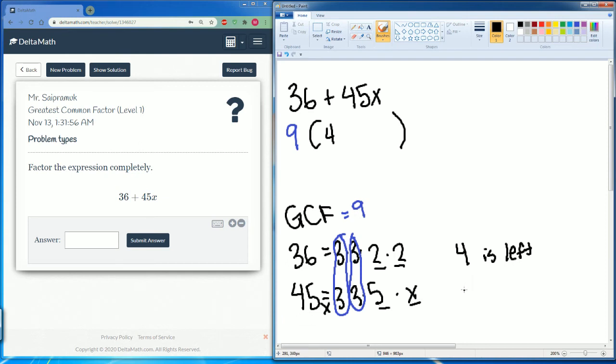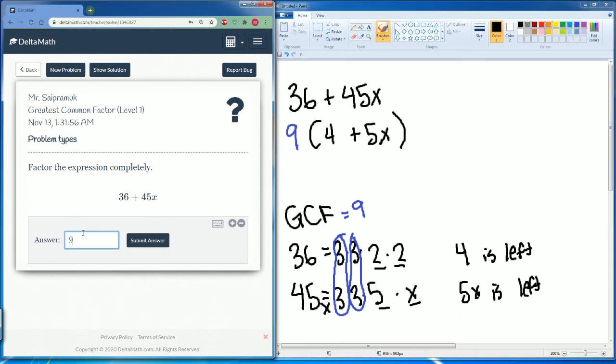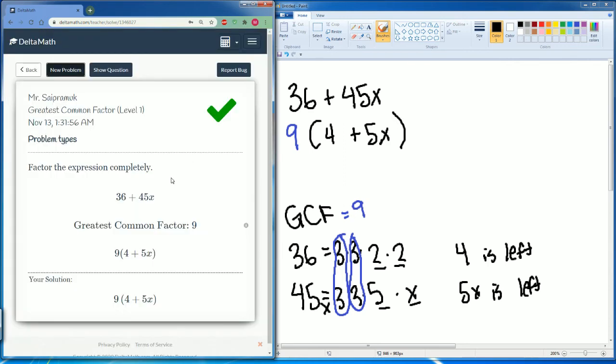Then what's on the bottom, the 45x? What is left there? Once we pull out a 9, a 5x is left. So we put plus 5x here. So that is our answer: 9(4 + 5x). Close the parentheses. Let's see, yep, we did that correctly. The greatest common factor here was 9.